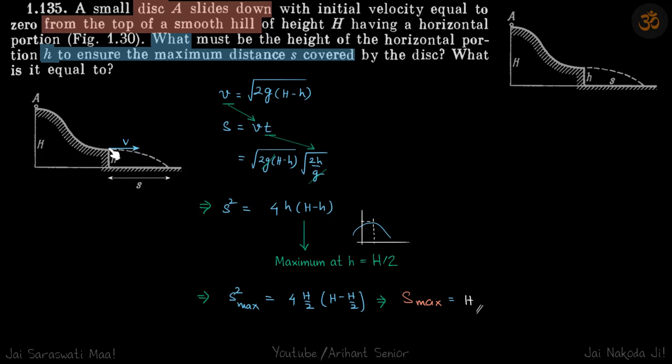v is given by root 2g into h minus h, and time is given by root 2h by g.